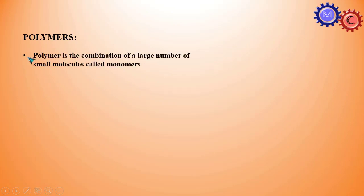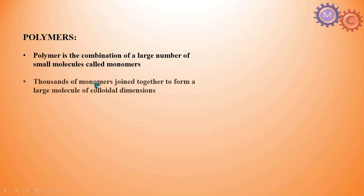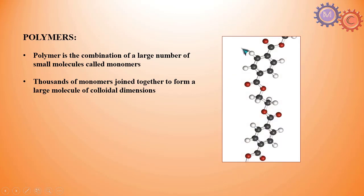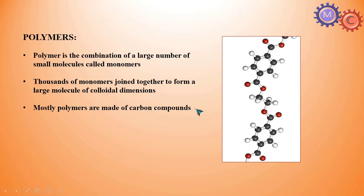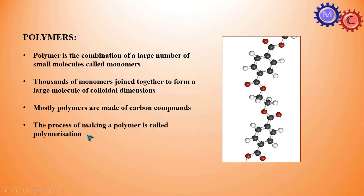Polymers. A polymer is the combination of a large number of small molecules called monomers. Monomers are single units. Thousands of monomers joined together form a large molecule of colloidal dimensions. Mostly, polymers are made of carbon compounds. The process of making a polymer is called polymerization. Examples include leather, wool, and silk.